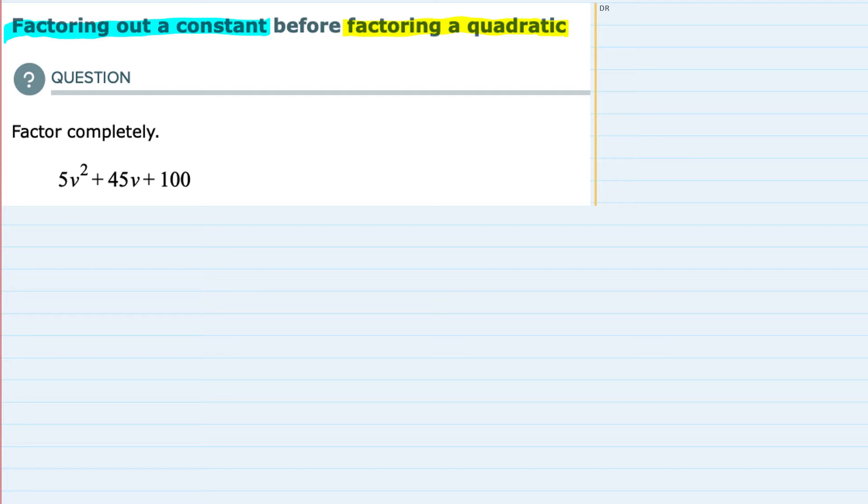The coefficients for each one of these terms are 5, 45, and 100. So I want to factor out the largest number that will divide evenly into each one of those three numbers.